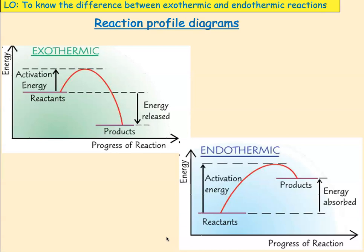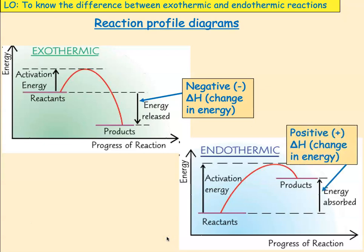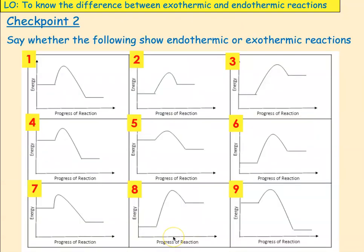Here are the two energy profile diagrams. In an exothermic reaction, the curve goes up to a peak and then the products are at a lower energy — it releases energy. In an endothermic reaction, there's also a peak, but the products are at a higher energy. We have a negative energy change in exothermic and a positive energy change in endothermic. Pause the video and write down for each of diagrams one to nine whether they show an exothermic or endothermic reaction based on the shape.